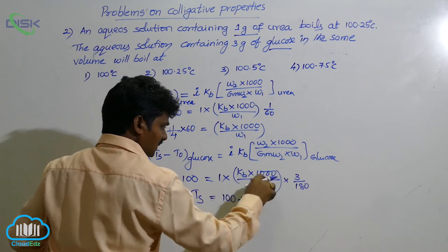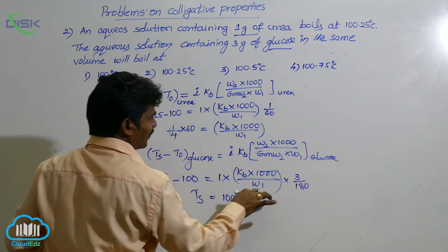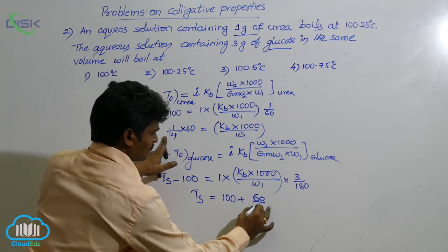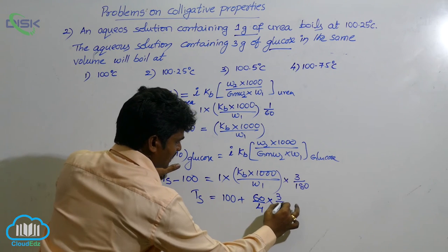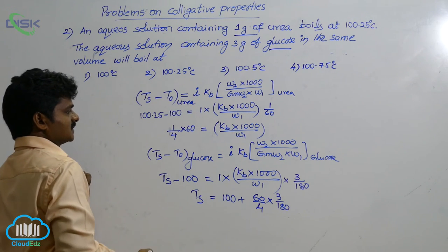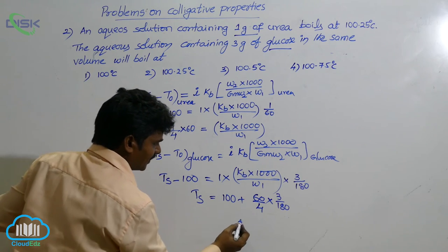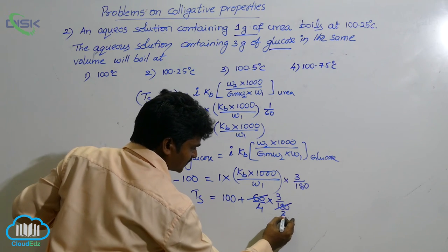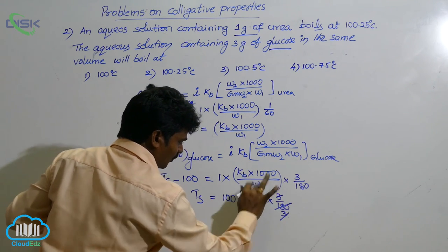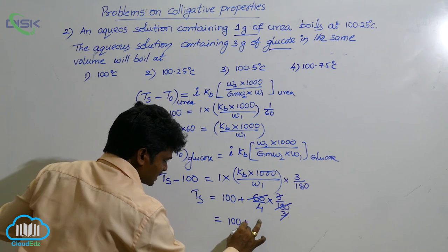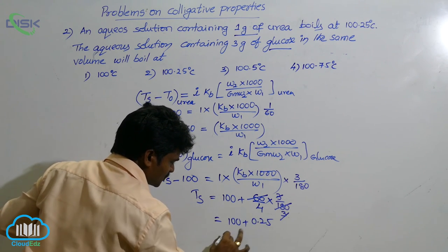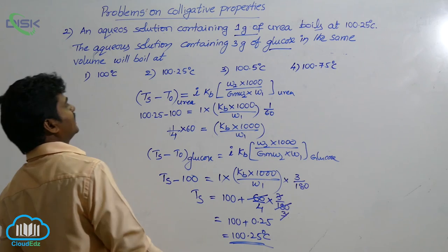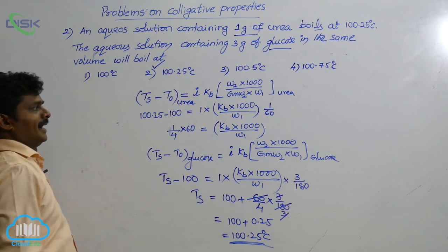1 into something, that means something. So KB into 1000 by W1, already we have that value. What is that? 60 by 4 into, it is already 3 by 180. 3 by 180. Now its value is 60 into 180, how many times? 3 times. 3 gets cancelled, so 1 by 4 is left over. 1 by 4 means 0.25. So answer is 100.25. So answer is 100.25 degree centigrade. Where is it? 100.25 degree centigrade is in second option.